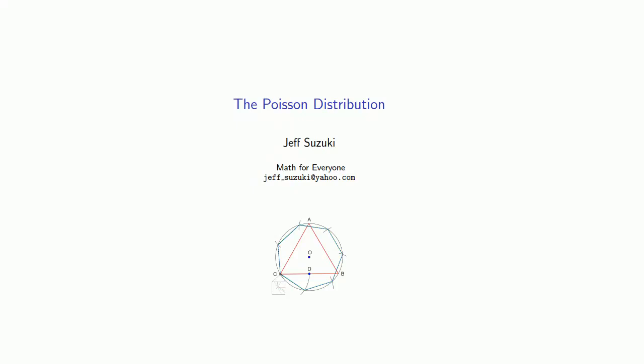One of the more important probability distributions is known as the Poisson distribution. Before introducing the Poisson distribution, we have to talk a little bit about an important distinction in the data: that between discrete and continuous.